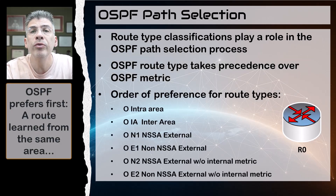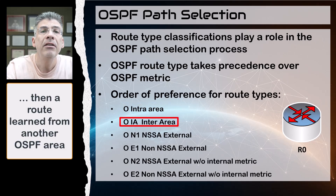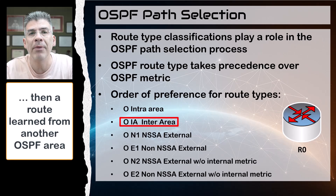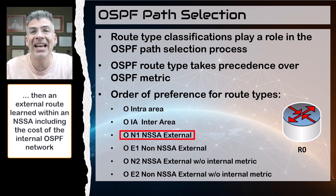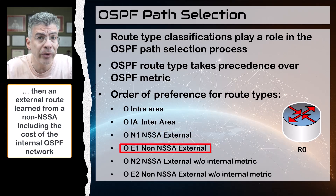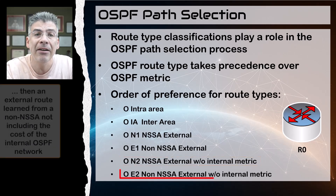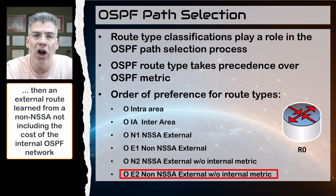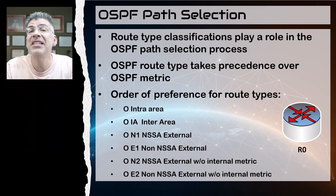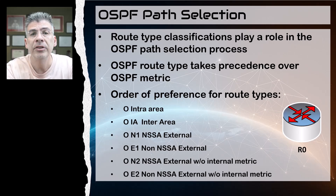OSPF will prefer a route learned first from within the same area, then from a different area but still within the OSPF domain, then from an ASBR in an NSSA including the internal metric, then from an ASBR in a non-NSSA including the internal metric, and finally from an ASBR in an NSSA not including the internal metric. This specific order has been defined within the RFC of OSPF because it is the most reliable, based on exhaustive tests used to design this routing protocol.